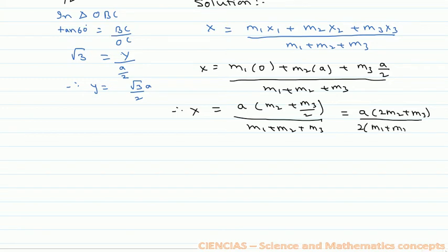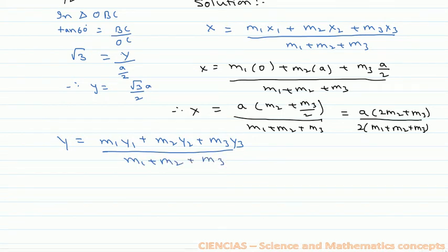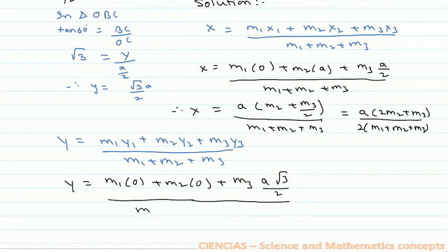Similarly, we find the y-coordinate. Y will be given by (m1·y1 + m2·y2 + m3·y3) divided by (m1 + m2 + m3). Therefore y equals (m1·0 + m2·0 + m3·a√3/2) divided by (m1 + m2 + m3).